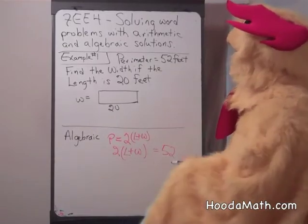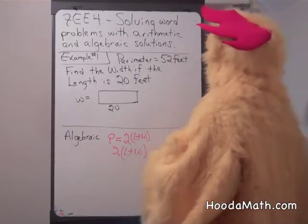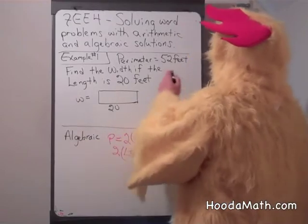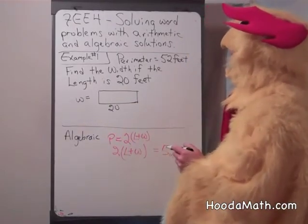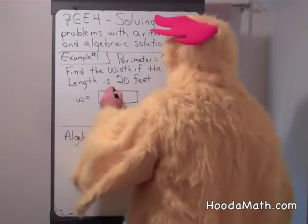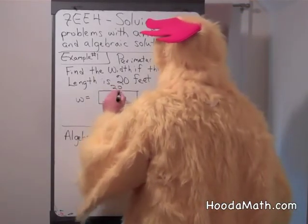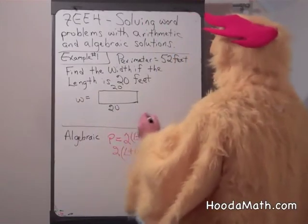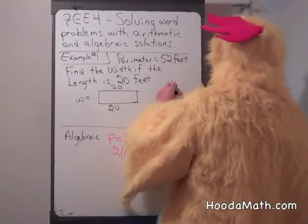So let's say we know that the perimeter of a rectangle is 52 feet. We're going to find the width if the length is 20. So if we know the length is 20, we know the other side is also 20. We have a total of 40 feet.